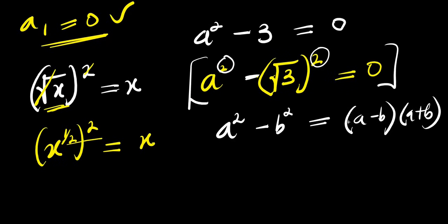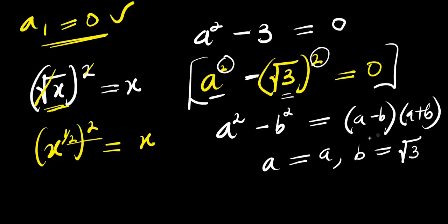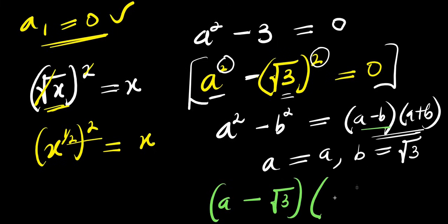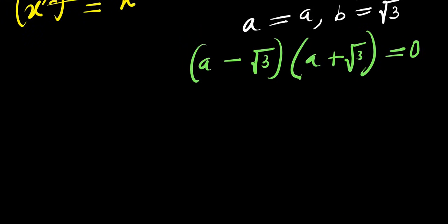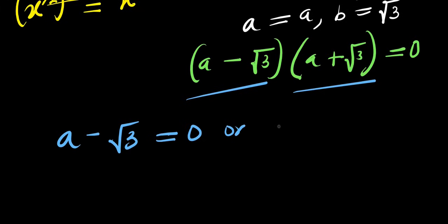In our equation, our a corresponds to a and b equals root 3. Inserting into the identity, we get (a minus root 3)(a plus root 3) equals 0. The next step is to equate each factor to zero: a minus root 3 equals 0, or a plus root 3 equals 0.